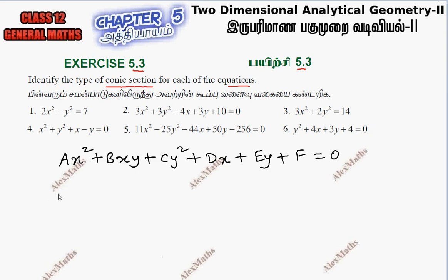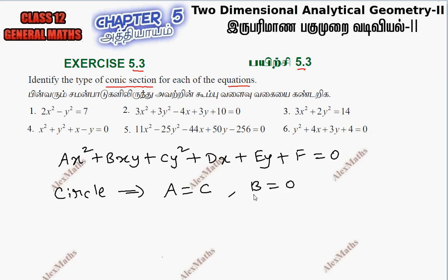This is a circle. Circle is a conic section. This is a condition: A is equal to C, and B is equal to 0. That is the XY term.